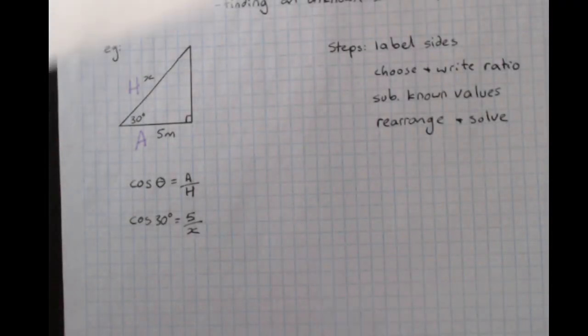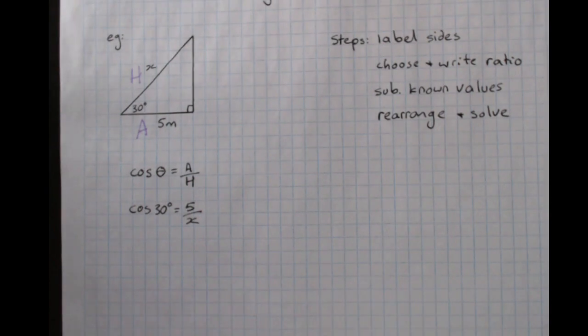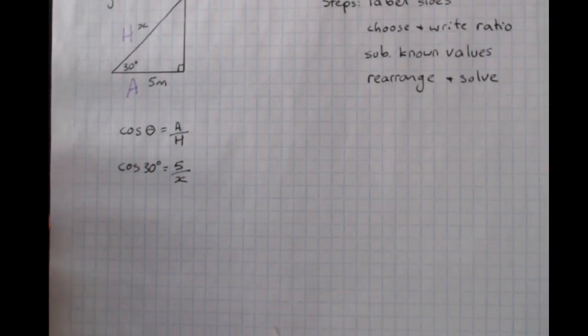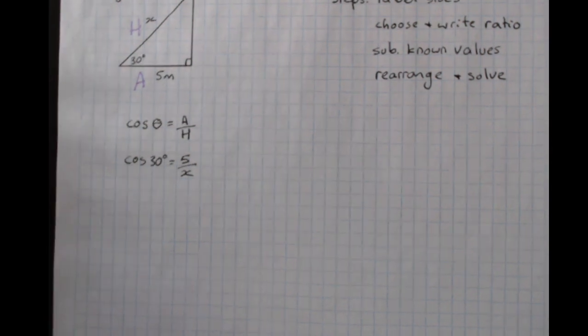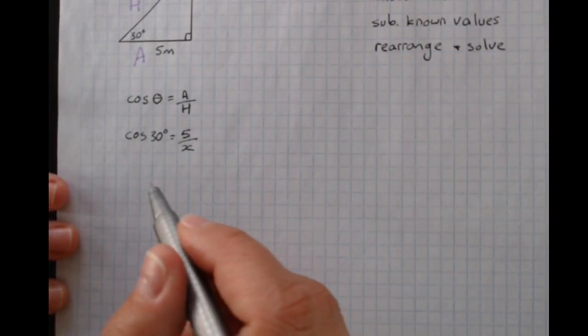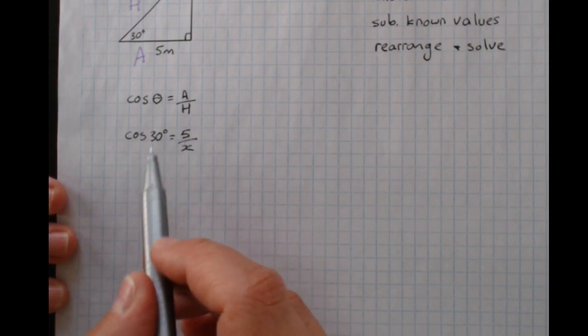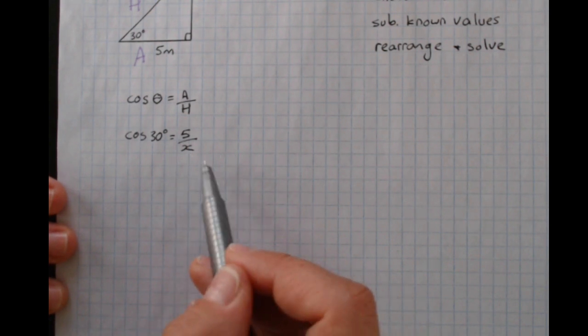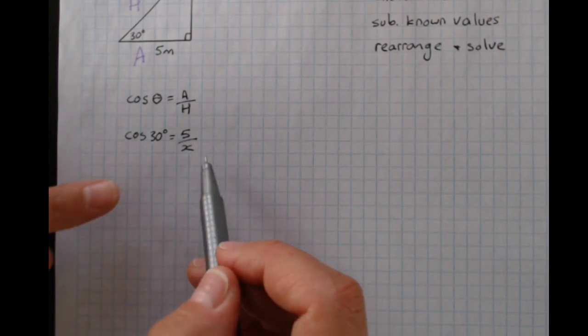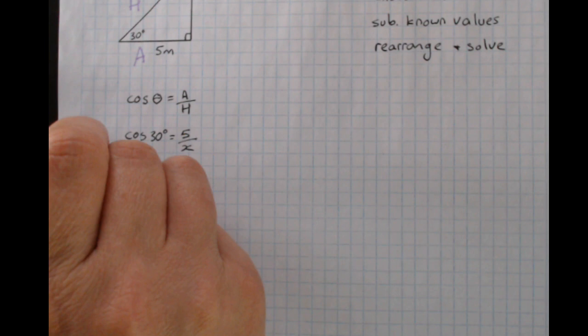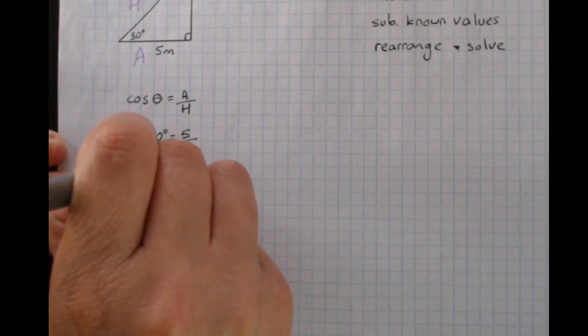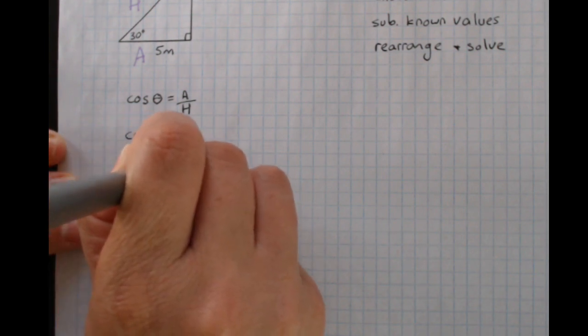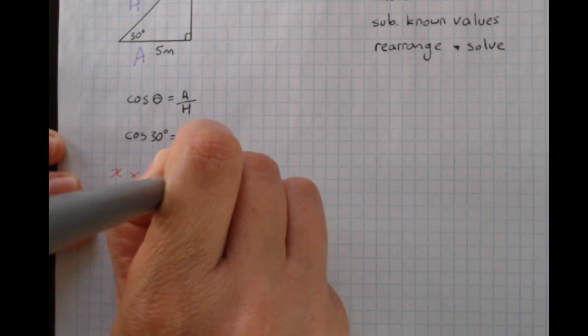Here, the x is on the bottom. There's a couple of different ways of dealing with this. Mathematically, what's correct is that we do two steps of working. I'm going to do this working in red because I don't actually need you to show this line. The only thing I can really move here is the divide by x, which I can reverse by doing times by x on both sides, which effectively means I'd get x times cos of 30 degrees equals 5.